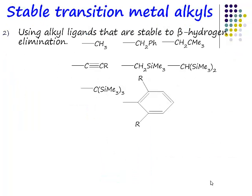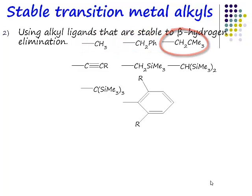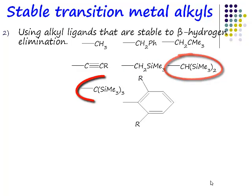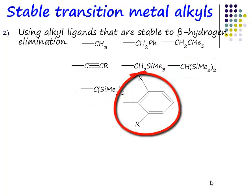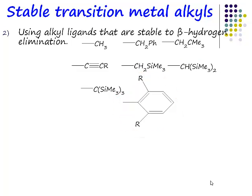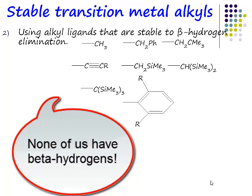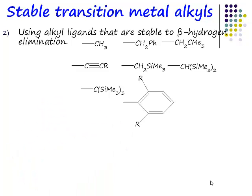What else can we do? Beta-hydride elimination — the clue is in the name. What do all of these alkyl ligands have in common? Here's a methyl group, a benzyl group, a neopentyl group, a trimethylsilylmethyl group, a bis-trimethylsilyl group, a tris-trimethylsilyl group, and phenyl ligands. What do they all have absent in common? Not one of them contains a beta-hydride. Of course, if you've got no beta-hydrogen, you can't have beta-hydride elimination, and if you don't get beta-hydride elimination, you don't make a hydride and you don't get reductive elimination.